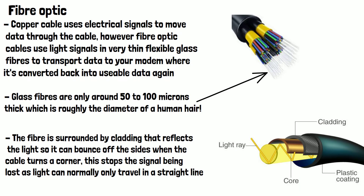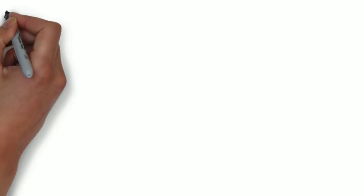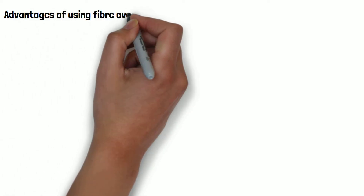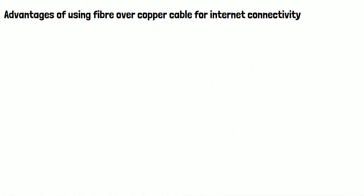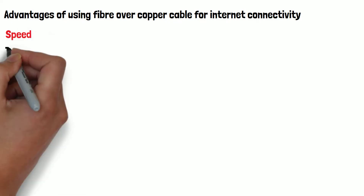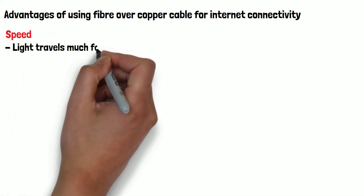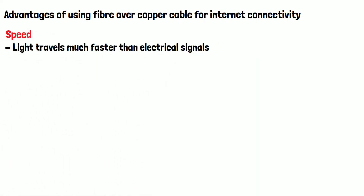So now we understand what a fiber optic cable is, what are the advantages of using fiber over copper cable for internet connectivity? One of the main reasons is speed. Light travels much faster than electrical signals, which means the data coming to you from the internet reaches you quicker with a fiber optic cable, so you have a faster internet speed.